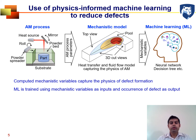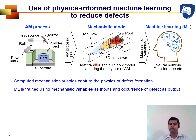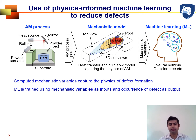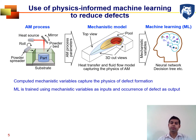We take the process parameters from experimental conditions and use them to simulate the process using a mechanistic model — a heat transfer and fluid flow model of the AM process — that calculates mechanistic variables, which are then used to train machine learning algorithms such as neural networks and decision trees. Because computed mechanistic variables are used to train the machine learning, we can capture the physics of the process through machine learning, which is called physics-informed machine learning.